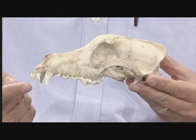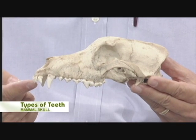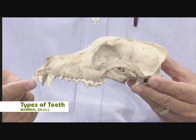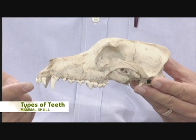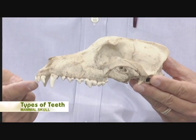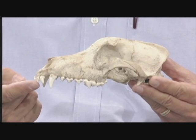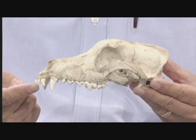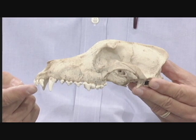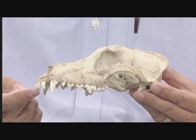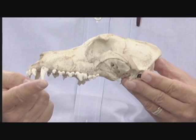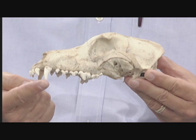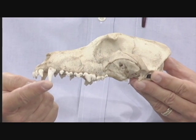The teeth up in the front on skulls are called incisors. Not every mammal has incisors, but this one does. Usually they're for biting, or sometimes actually for gnawing. And then the next tooth down is, in this animal, really pretty large.